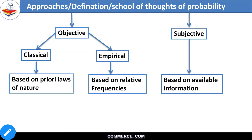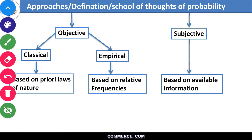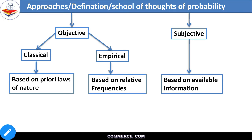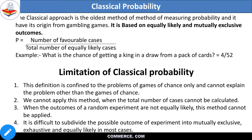So here are the approaches. Now we have approaches which are based on objective and subjective. On the basis of objective, there are two types: classical and empirical. And then there is subjective approach. Let's move to the next slide — classical probability or classical approach — the first approach. This is important because here is where probability formula arises.